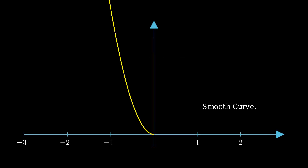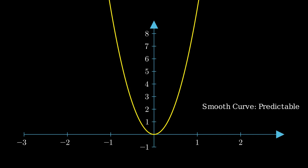Let's begin with something familiar: a smooth curve, like those you might have studied in calculus — predictable, with a clear direction. In classical calculus, we can easily find the slope of a smooth curve and predict its behavior. Look how the tangent slides gently along the parabola.